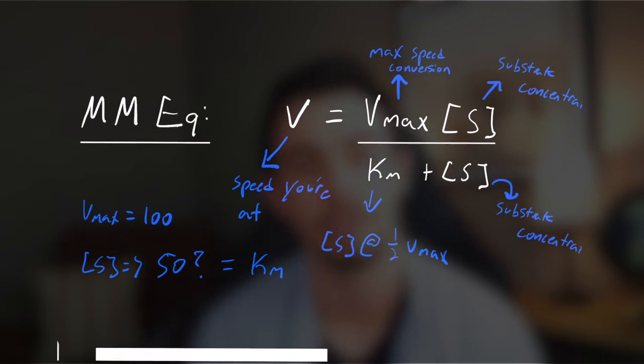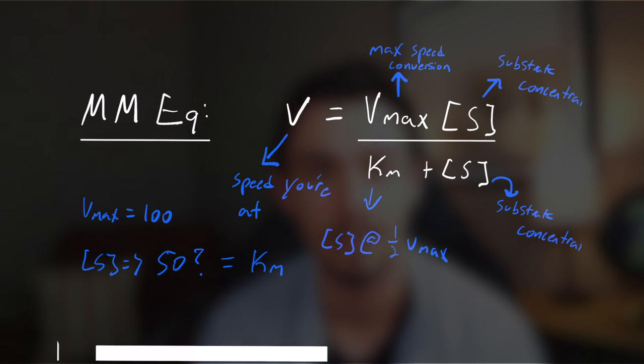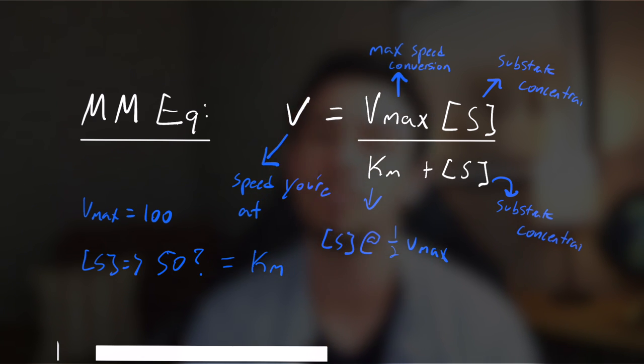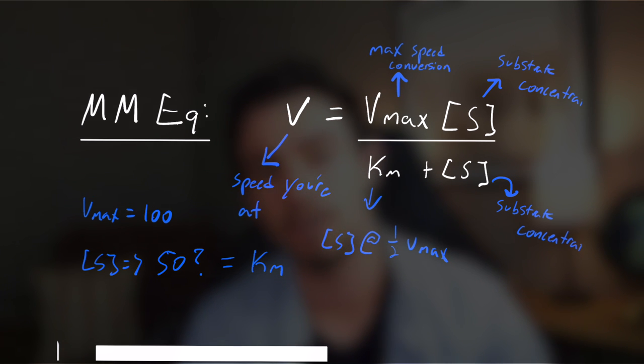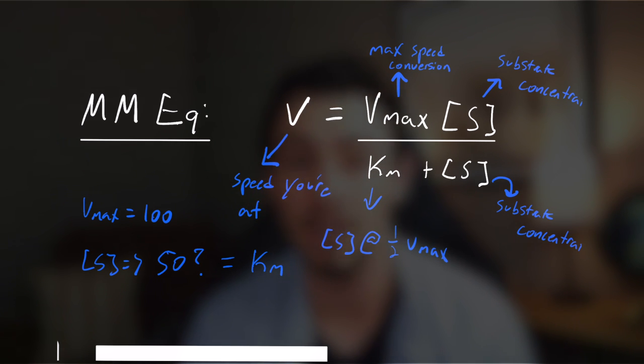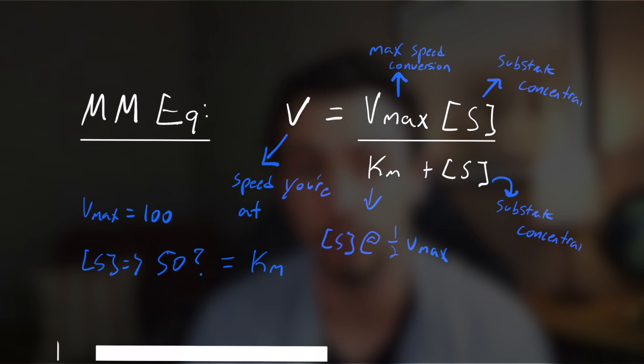Let's take a look at a question from the AAMC to see how they conceptually test this equation. First, what is the equation? V equals Vmax times substrate concentration, divided by Km plus the concentration of substrate. Make sure you memorize that — throw a flashcard into your rotation because it's probably going to be on your test.